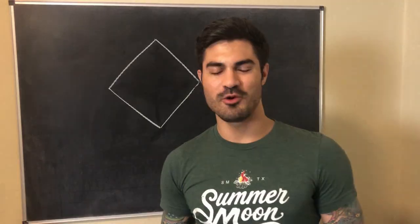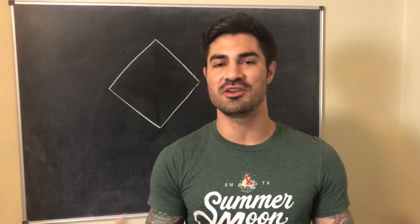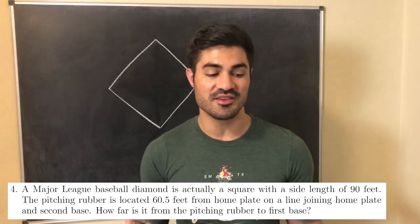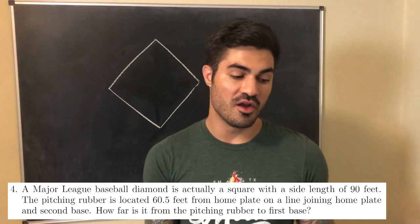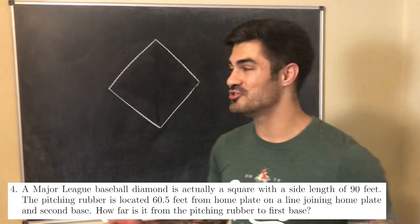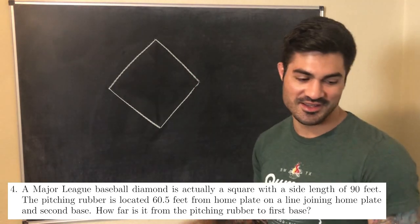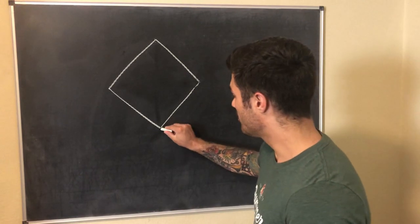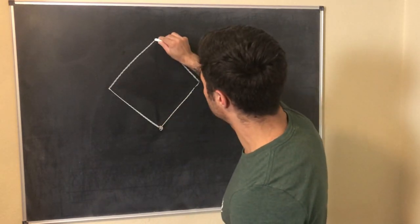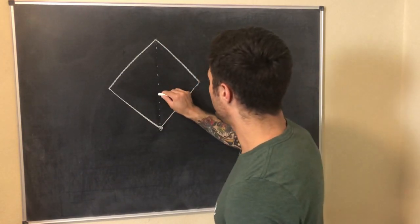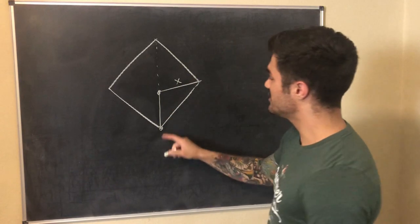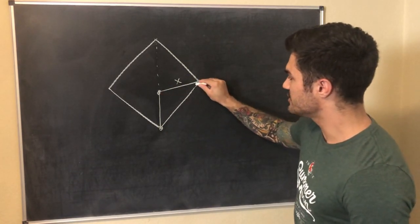Let's jump into problem four. A major league baseball diamond is a square with side length 90 feet. The pitching rubber is located 60.5 feet from home plate on a line joining home plate and second base. We want to find how far it is from the pitching rubber to first base. The diamond has home plate, first base, second base, and third base. The pitching rubber is somewhere along the line from home plate to second base.